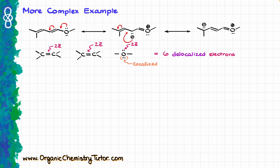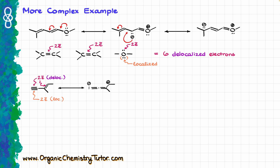Not every single pi bond is going to be delocalized either. Let's say we have an example with a triple bond. There are quite a few different resonance structures I could potentially draw — let's go with the one where I push my electrons towards the triple bond, giving me the following resonance contributor. Looking carefully at which electrons were used, I only used one pi bond of the triple bond; the other pi bond was not used, so those electrons are localized. That gives me two electrons from the triple bond and two from the double bond — four delocalized electrons total.